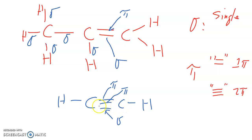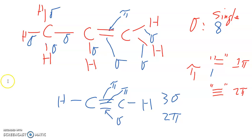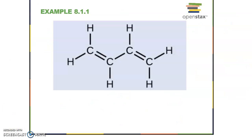Let's count for a specific molecule. Every bond that connects two atoms — the first one is a sigma bond. Counting all single bonds and one sigma from each double or triple bond, there are eight sigma bonds and one pi bond in this first molecule. For the next molecule, counting gives three sigma bonds and two pi bonds.